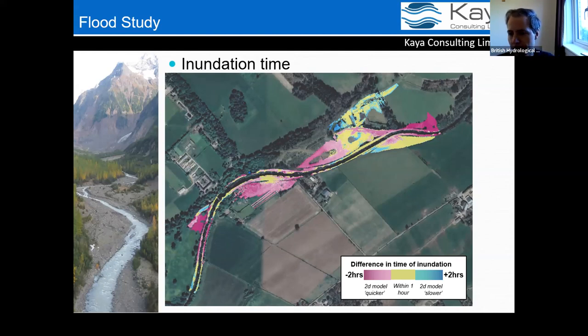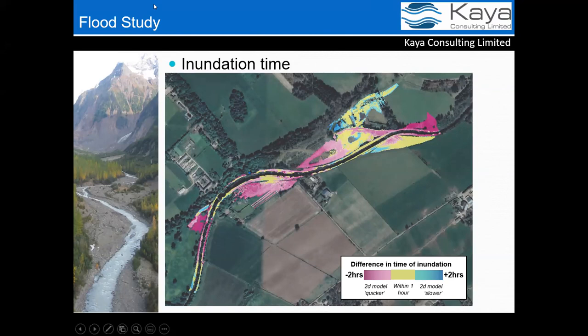Becky asks: was there any calibration against observed data for more frequent return periods in the case studies? Unfortunately there wasn't — these were studies based around development sites, not selected for data availability. If we take this forward and frame a more formal research project internally, we will select sites with more information to help with proper calibration.